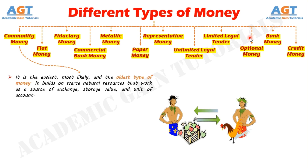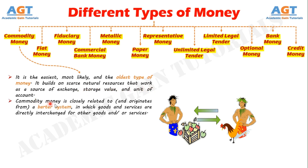Number 1: Commodity Money. It is the easiest, most likely, and the oldest type of money. It builds on scarce natural resources that work as a source of exchange, storage value, and unit of account. Commodity Money is closely related to, and originates from, a barter system, in which goods and services are directly interchanged for other goods or services.